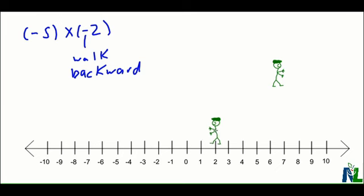So I go one step, two steps, three steps, four steps, five steps to end up at positive 10. So a negative 5 times a negative 2 will equal a positive 10.